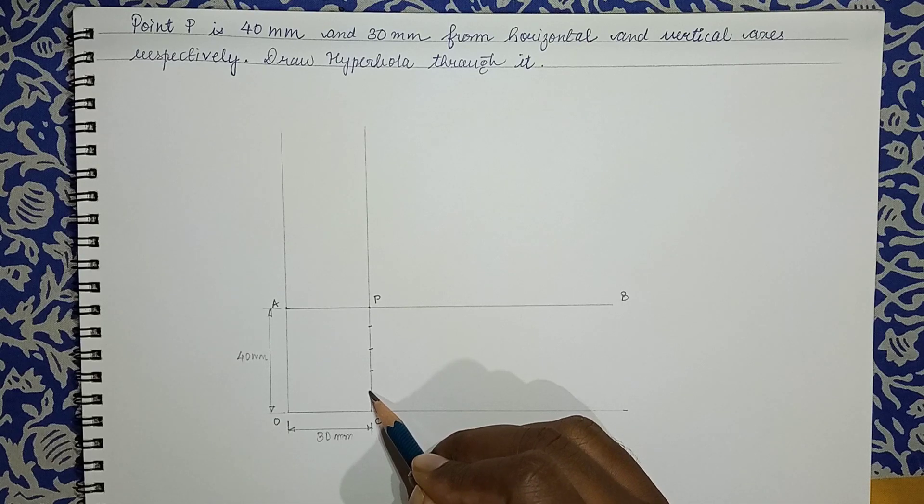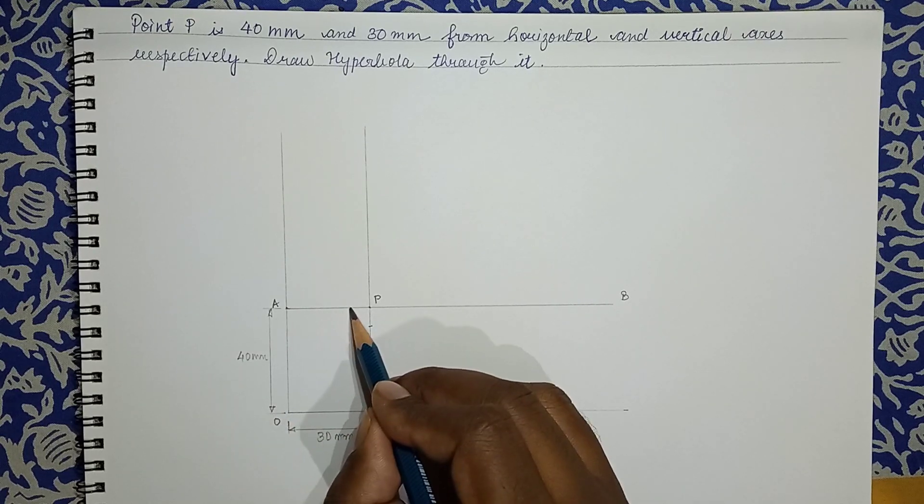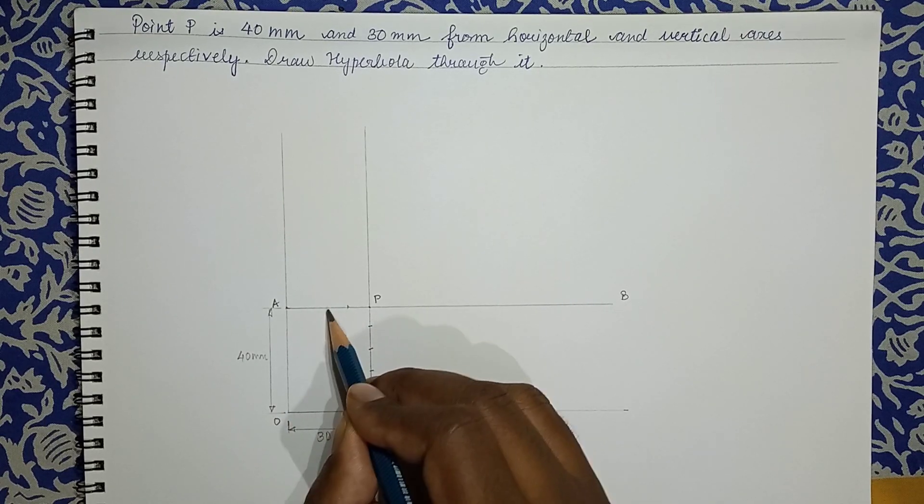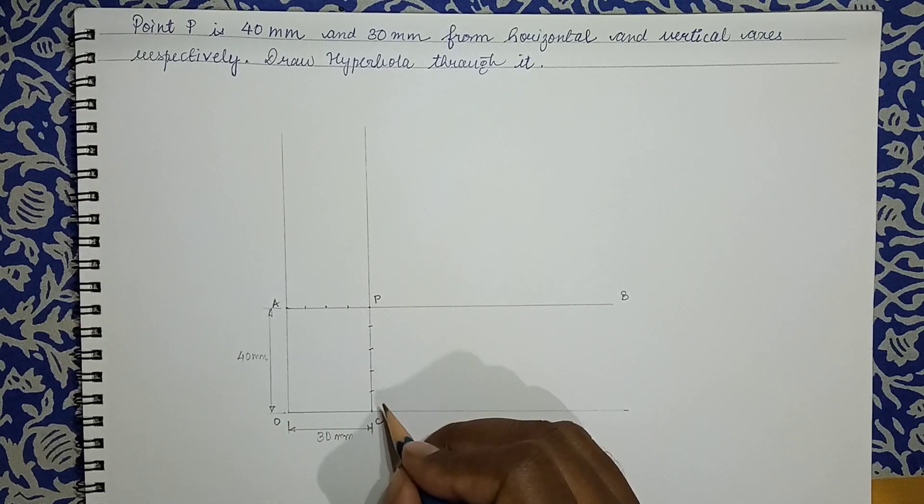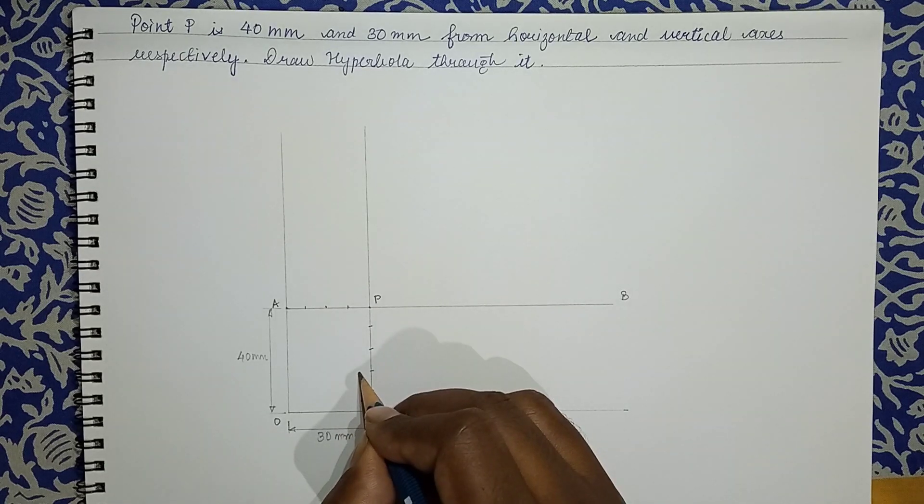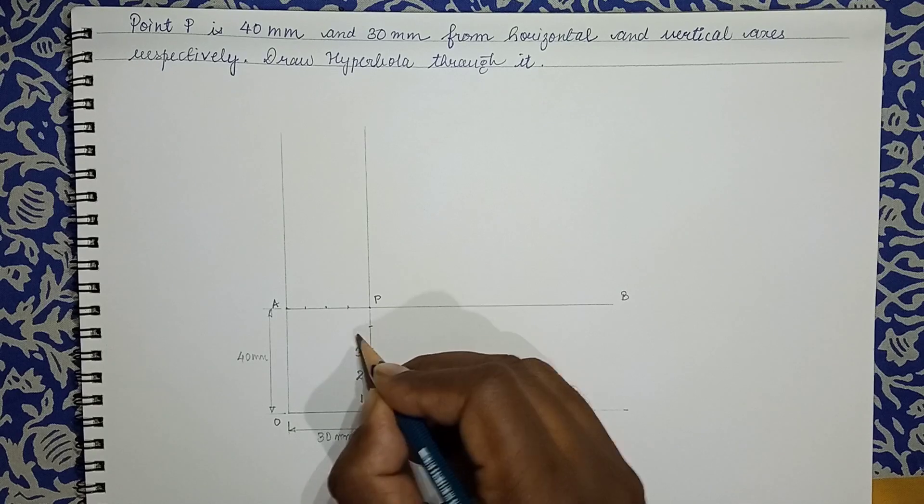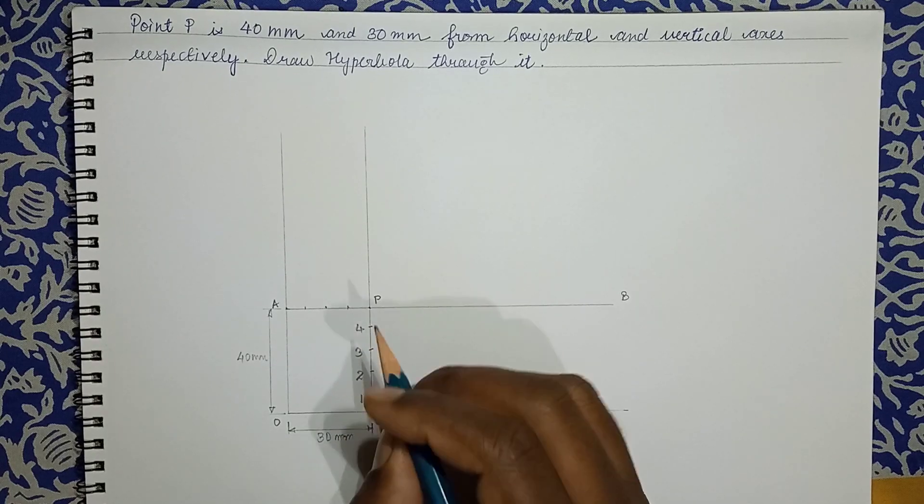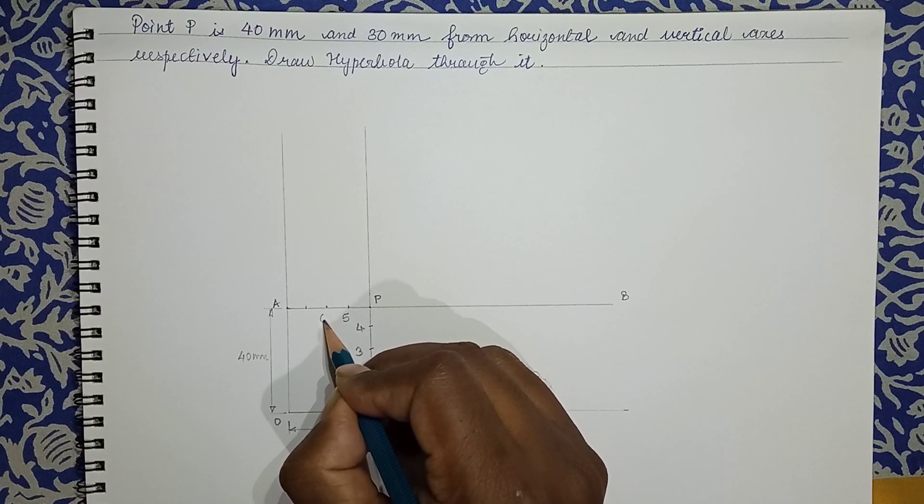So I have divided here into four points at comfortable distance. And side AP, I will divide this into three points. I label them as 1, 2, 3, 4, 5, 6, and 7.